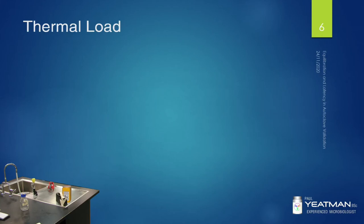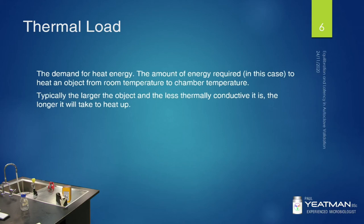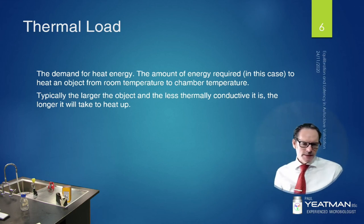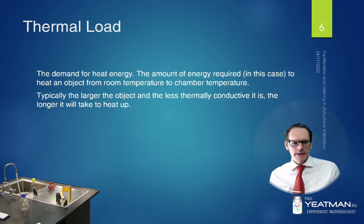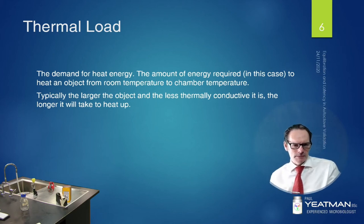Next up, thermal load. What is thermal load? That's pretty much the demand for heat energy — the amount of energy required to heat an object from room temperature, because hopefully you've started your autoclave cycle from rest, to the chamber temperature of 121 degrees Celsius. Typically the larger the object and the less thermally conductive it is, the longer it will take to heat up. So a piece of metal in an autoclave exposed to the steam should heat up faster than anything else because it has great thermal conductivity. Items within glass that contain liquid might heat up next fastest because water is a good conductor of heat, but there will be a little bit of air which doesn't conduct moist heat.